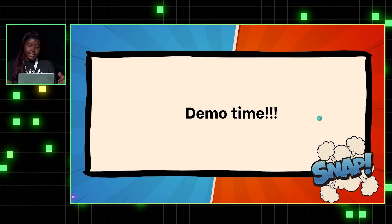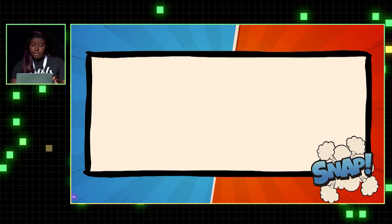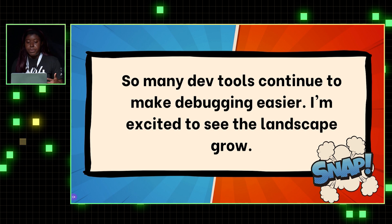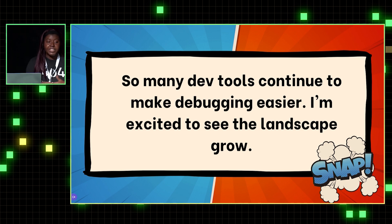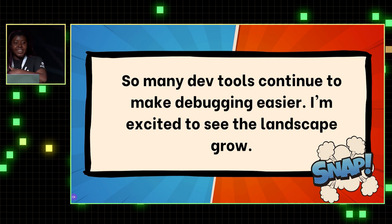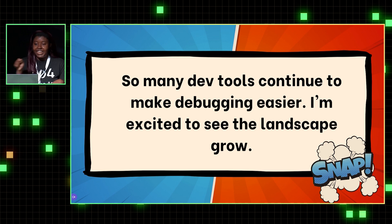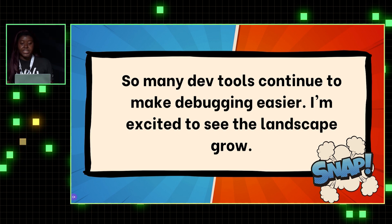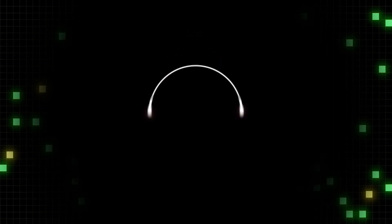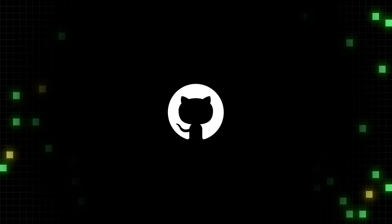I'm super excited for the direction that developer tools are going in to make debugging easier. There are projects like replay.io that enable a time travel debugger and all these other things that make developing easier. Every time I listen to somebody talk about coding back in the day — like hearing Martin talk about printing out the Git revisions and highlighting version control — it's really wild that that happened. But I'm super excited to see this landscape grow and make things a little bit easier for us. That's all I have. Thank you, everyone.